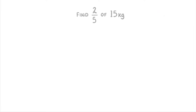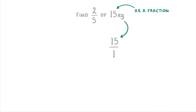To find a fraction of something, like 2 fifths of 15 kilos, we write the 15 kilos as a fraction. So we turn it into 15 over 1, which we're allowed to do because 15 divided by 1 is just 15. So we haven't actually changed its value at all.